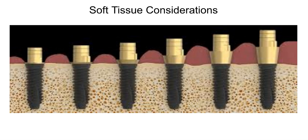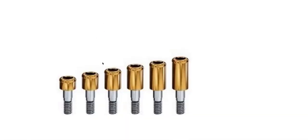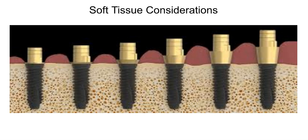Soft tissue collar height of implant prosthetics is important: 0, 1, 2, 3, 4, 5. You need to know this if you're ordering locators. For a two-implant overdenture, the company says the ideal height is where this gap is one millimeter above the soft tissue. If you place this in a one millimeter transmucosal dimension, you're going to have biomechanical instability. Understanding this stuff is important.